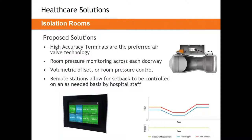We also recommend installing room pressure monitors across each doorway — this is a requirement, not just a recommendation. For the isolation space, both volumetric offset control and room pressure control are acceptable solutions. Both pressurize a room using a difference between supply and exhaust air. In volumetric offset, the controlled variable is flow; in room pressure control, the controlled variable is the actual room pressure. Because isolation rooms are so stable with low occupant traffic, either strategy works very well.